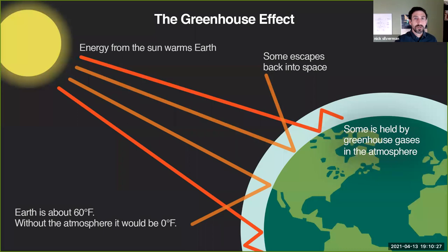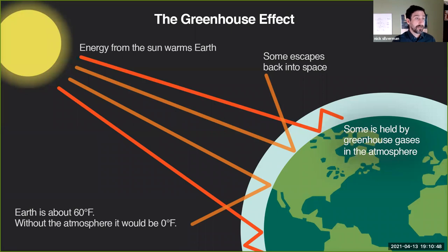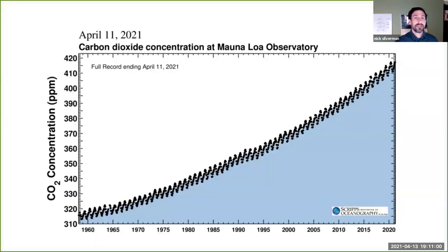What causes climate change? It starts with the greenhouse effect — the ability of Earth's atmosphere to trap heat from the sun. The greenhouse effect is overall a good thing. Without it, Earth would be zero degrees Fahrenheit and nearly uninhabitable; instead it's about 60 degrees. So overall the greenhouse effect is a good thing — it traps heat and makes things comfortable for us to live on Earth.